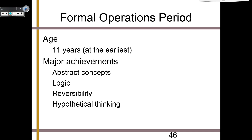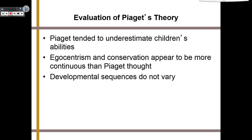Let's evaluate Piaget's theory. One problem is that he tended to underestimate children's abilities — he said if you're this age, you're in this stage, and that's the end of it. We've also learned that egocentrism and conservation appear to be more continuous than Piaget thought, so not everybody masters them by the time they're supposed to. Developmental sequences do not vary in Piaget's theory — if you're this old, you're in this stage, and they don't jump around. If you've ever known an intelligent child that seems to be mastering these concepts earlier than Piaget said they should, you can understand why this could be an issue.